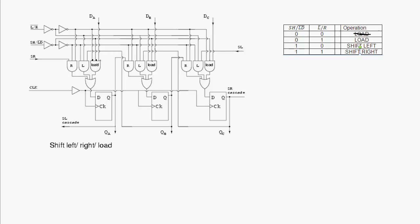So if these two inputs are ones, then it's the value of DA that will get passed through to the flip-flop, and on the rising edge of the clock the DA value will get mapped through. At the exact same time, the value of DB is going to be mapped through to the D input of the next flip-flop, and on that same rising edge it maps through to the output. The same thing happens for DC. So the outputs QA, QB, and QC will all be set to whatever the values of DA, DB, and DC are, if the shift-load is set to 0 and the left-right is set to 1.